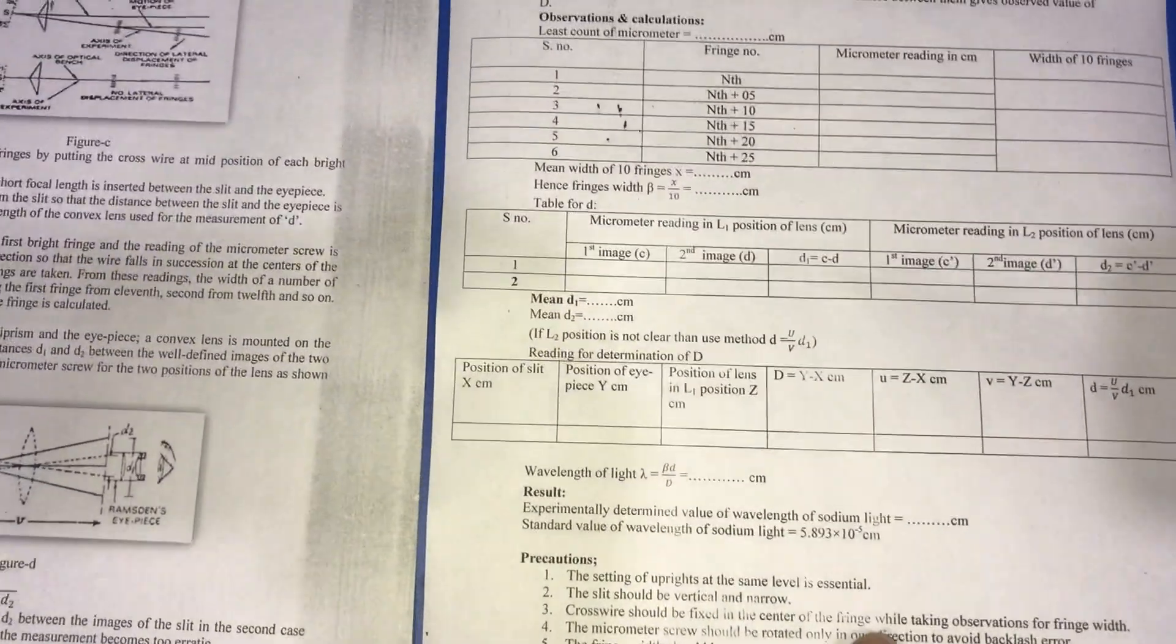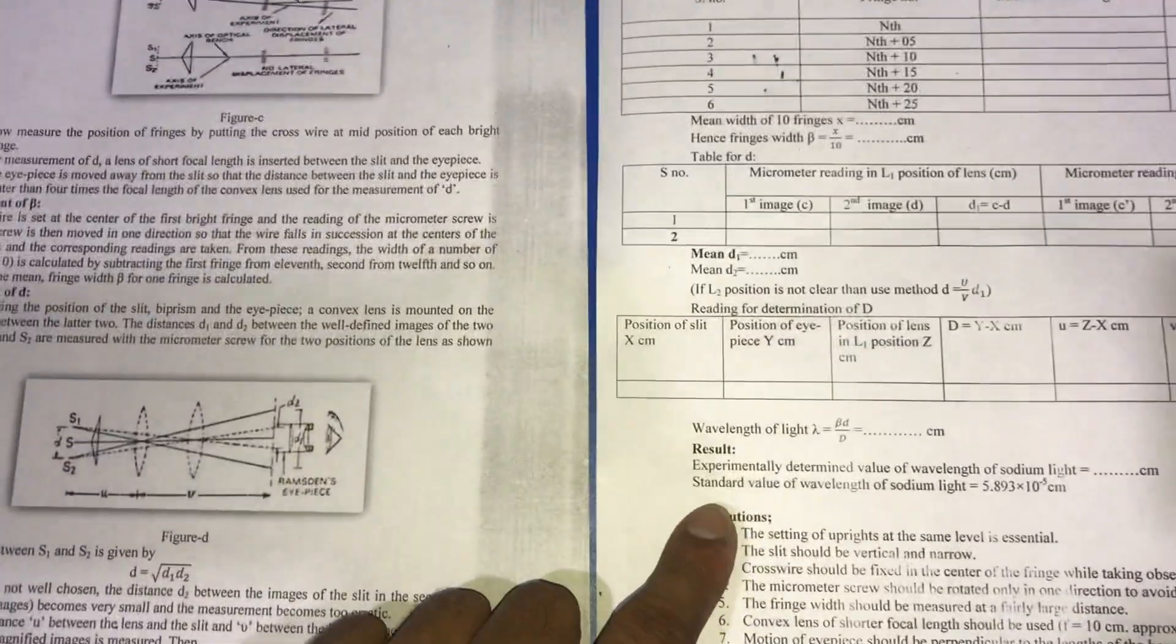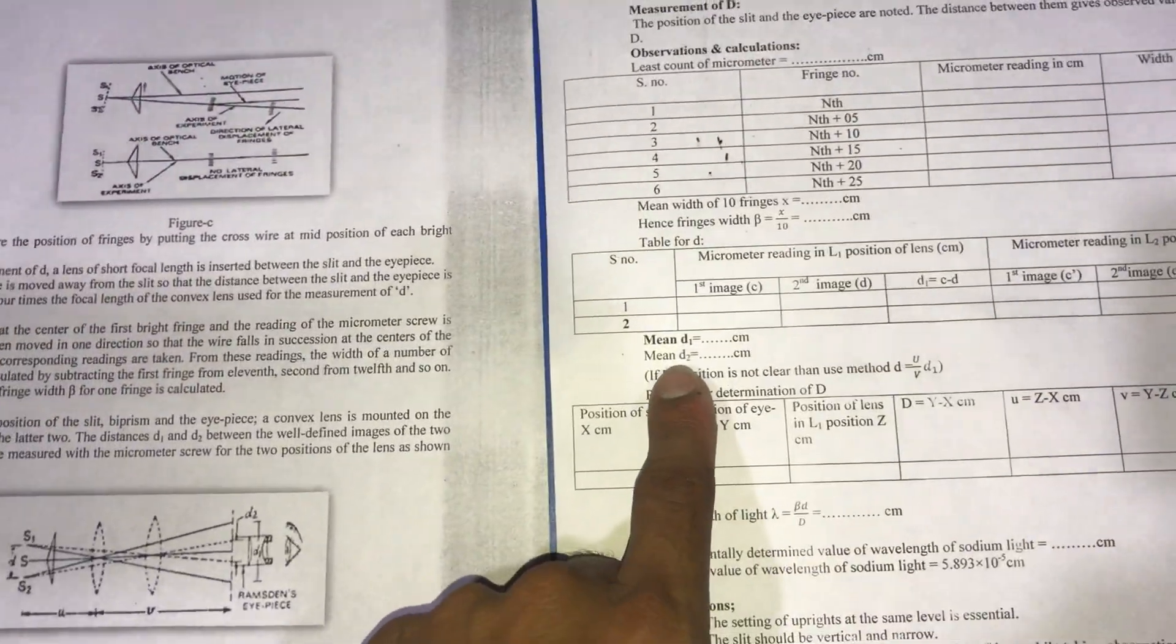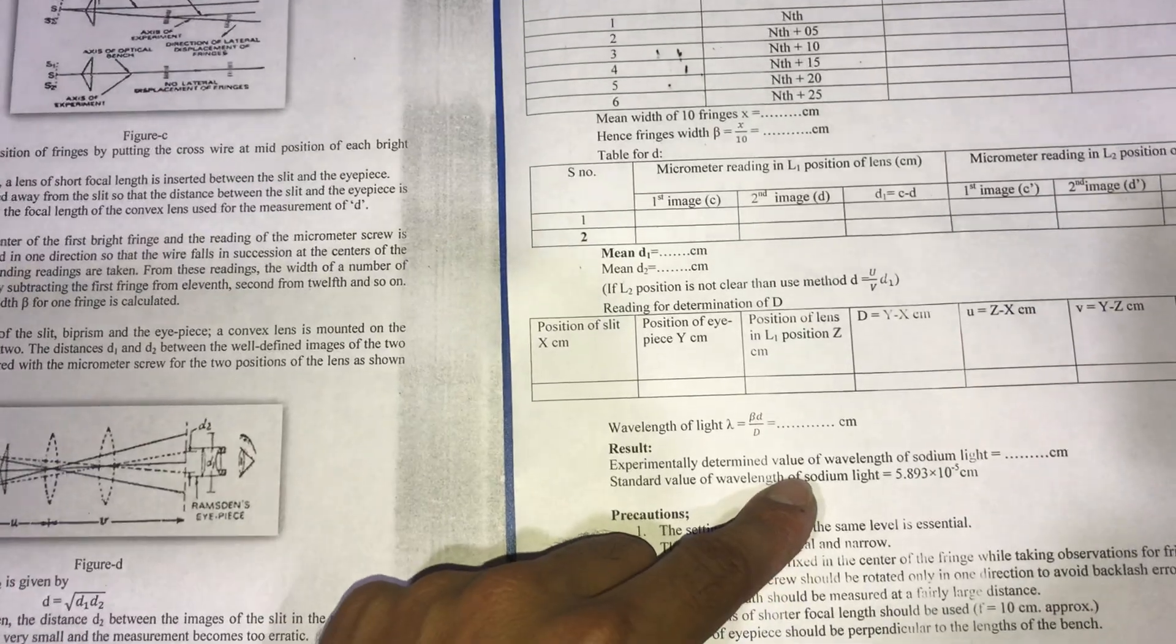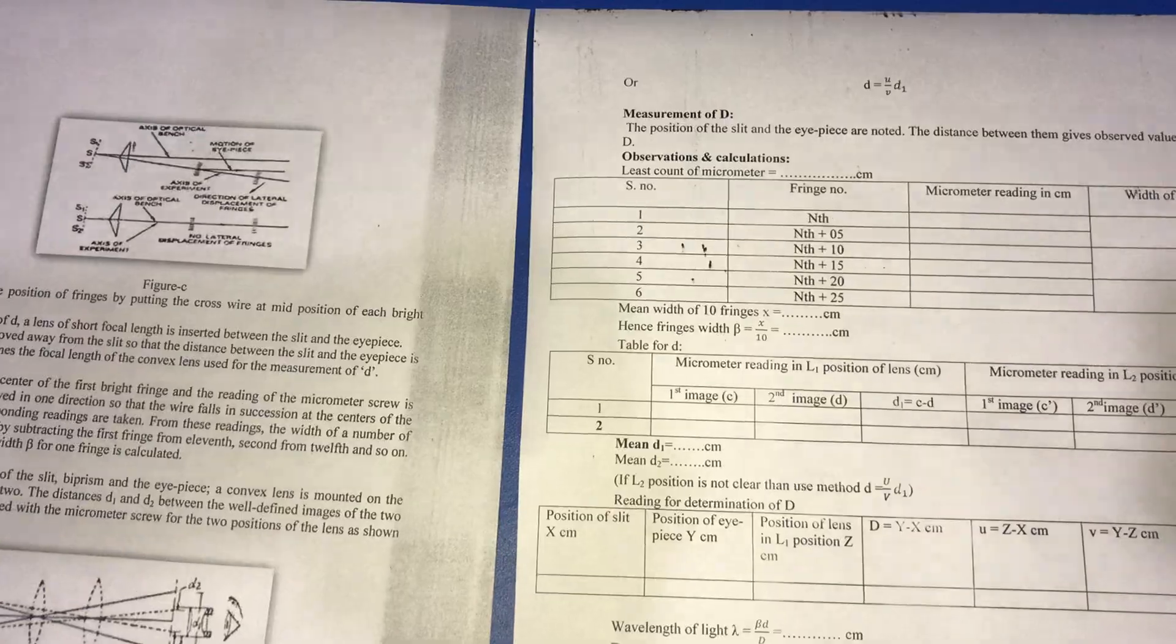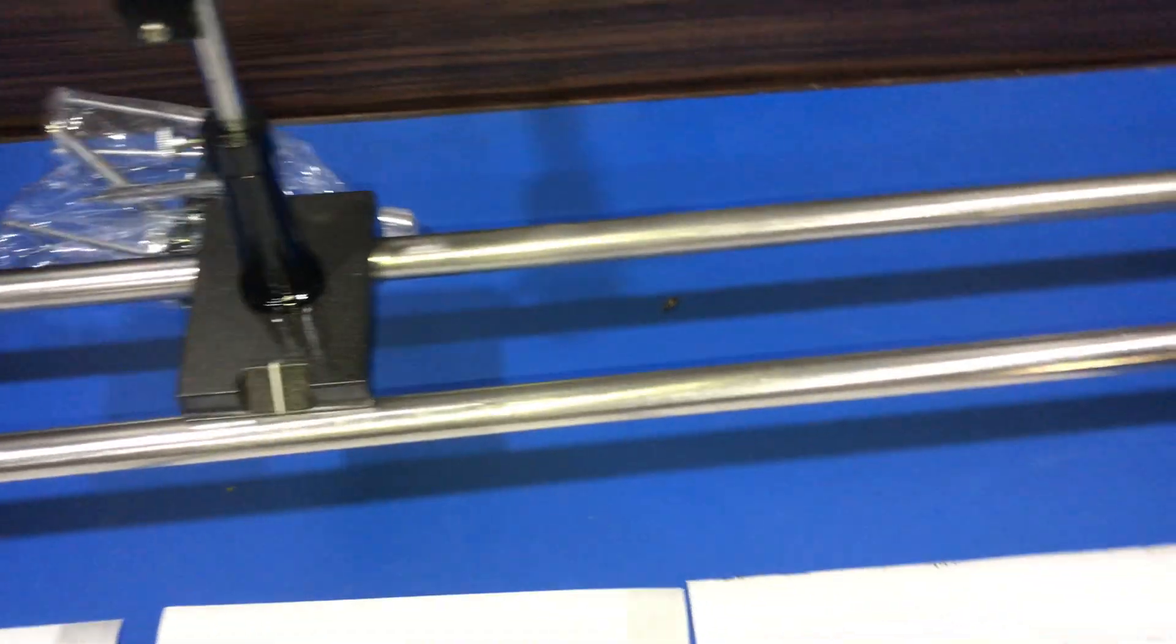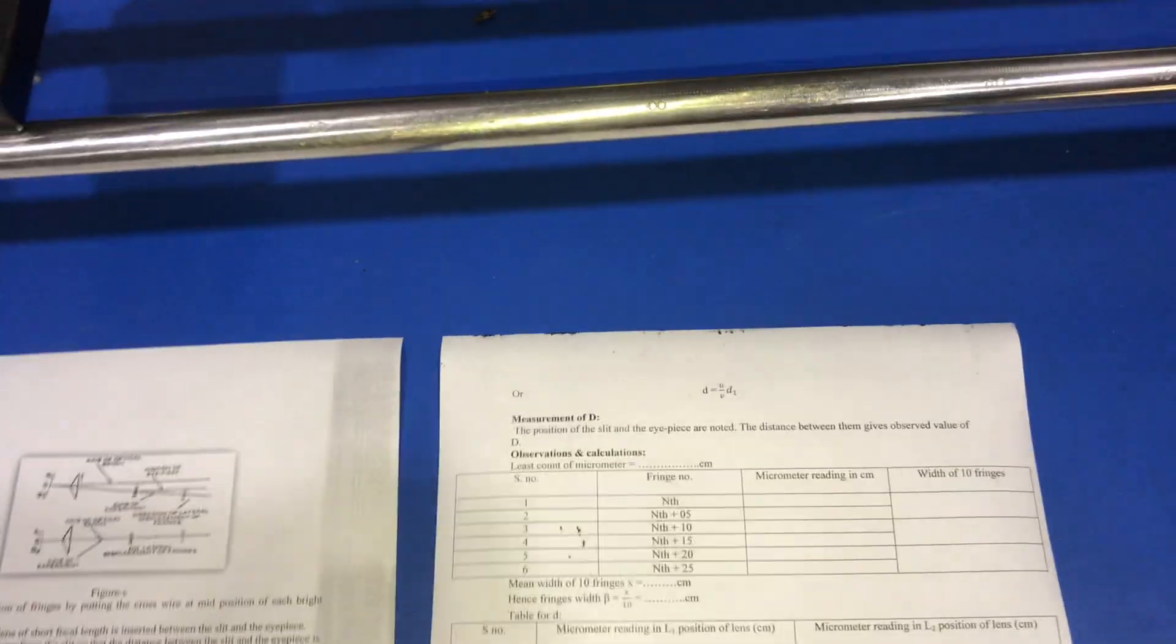After that, we calculate the value of distance d by applying the formula: d equals square root of d1 times d2. We also calculate the value of d with another method by calculating u and v.